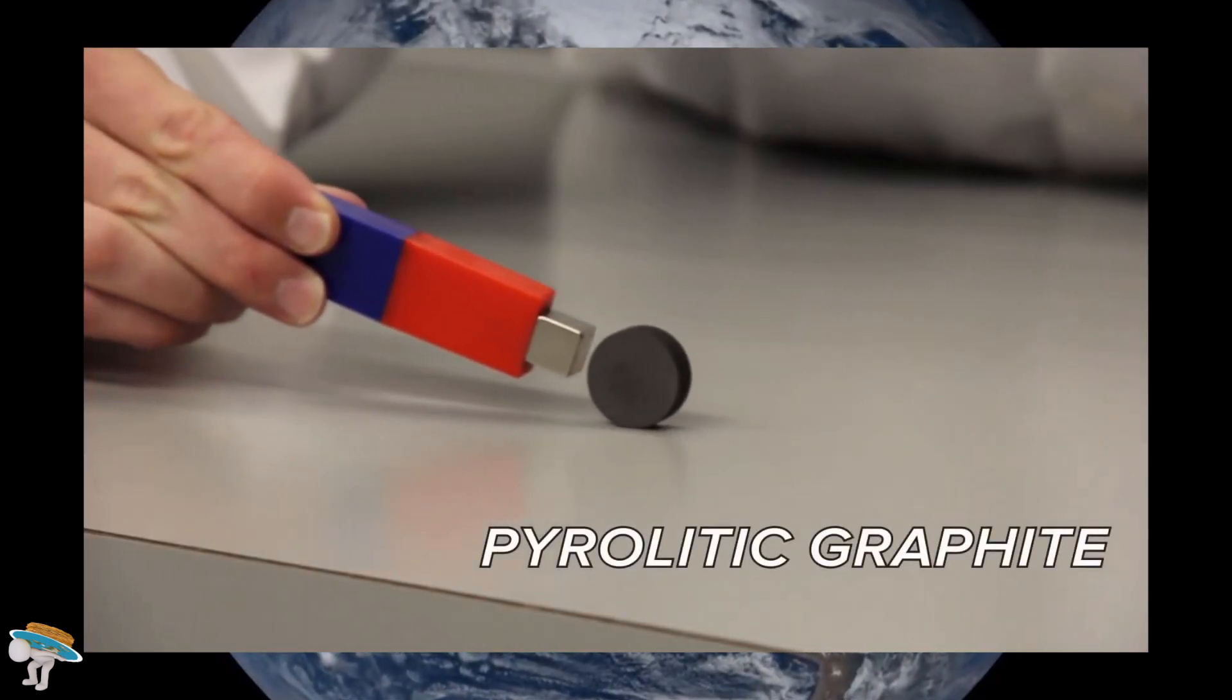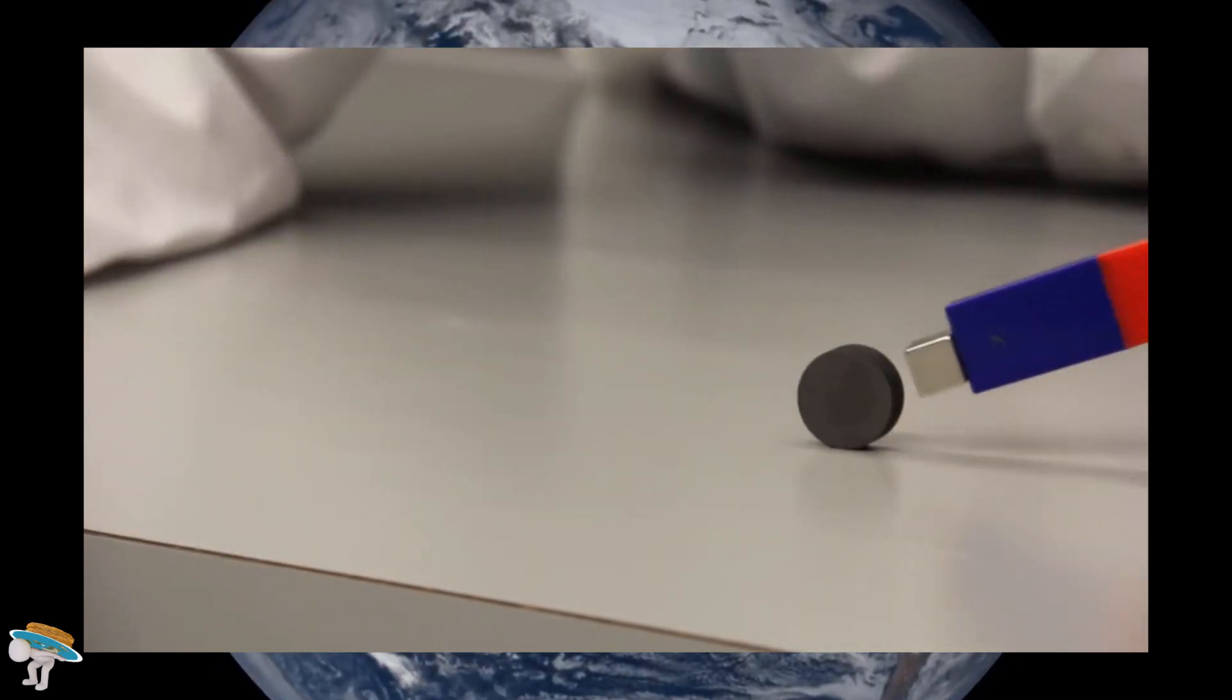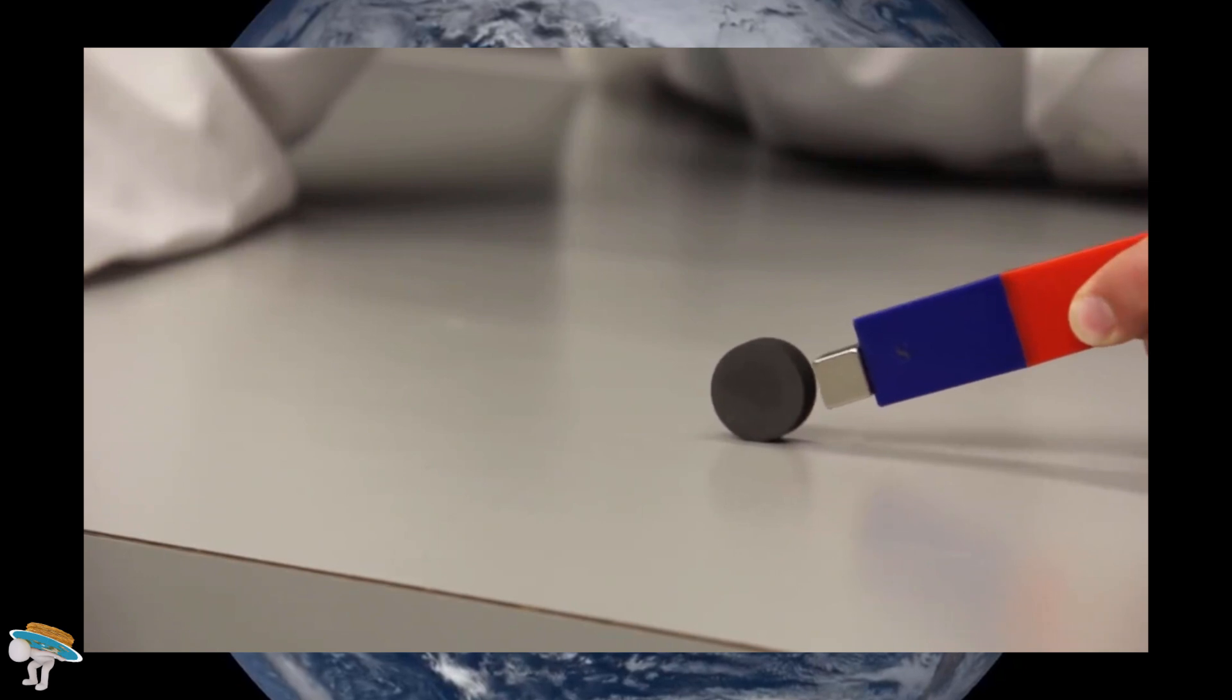An important example of a diamagnetic material is graphite. This specially made pyrolytic graphite is repelled by a magnetic field. Don't be confused. This is not static electricity or eddy currents. Graphite is repelled by a magnet, always, both by the north and south end.